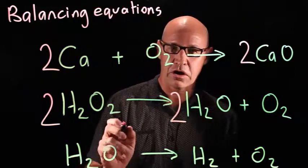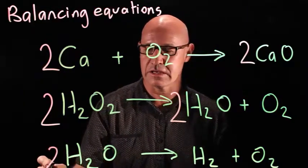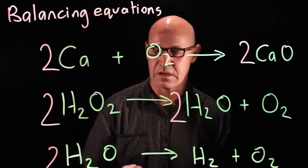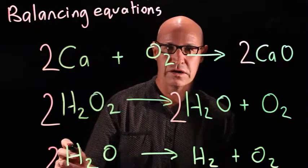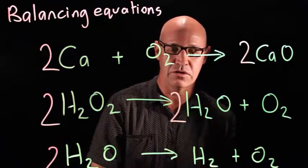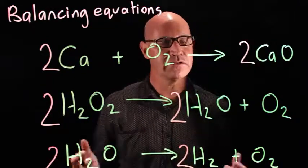All right, there's only one thing we can do. We can put a coefficient out the front here. So it's two oxygen, two oxygen. That works out well. But now our hydrogens aren't right. Two times two, we've got four hydrogen here and only two here. How do we solve this? Just putting a two there. It really is that easy.